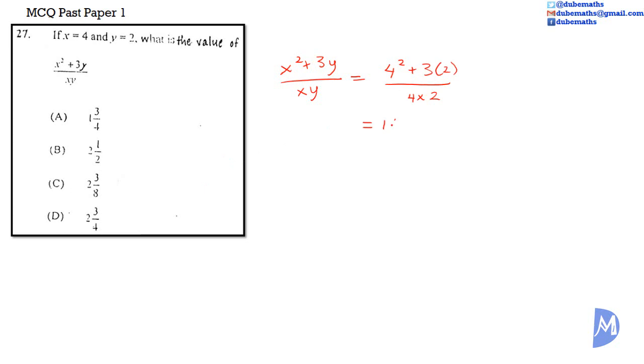4 squared is 16, added to 3 multiplied by 2 is equal to 6, divided by 4 multiplied by 2 is equal to 8. 16 plus 6 is equal to 22 over 8. Both 22 and 8 can be divided by 2. 22 divided by 2 is equal to 11, 8 divided by 2 is equal to 4. We have 11 over 4.